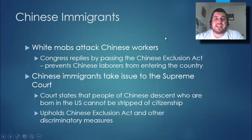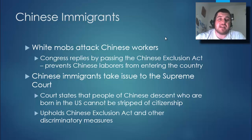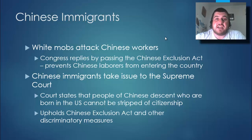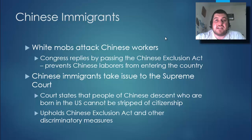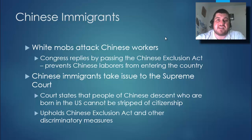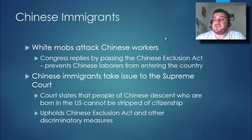Moving on to Learning Target 2: the Chinese were attacked because many whites thought they were taking away jobs, especially in California where there was a very large Asian population. Congress responded by passing the Chinese Exclusion Act, preventing Chinese laborers from entering the country. Chinese immigrants took the issue to the Supreme Court, which upheld the Chinese Exclusion Act and other discriminatory measures, but did state that Chinese people born in the U.S. could not be stripped of their citizenship — a small victory.